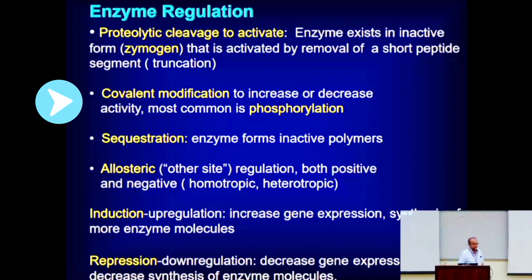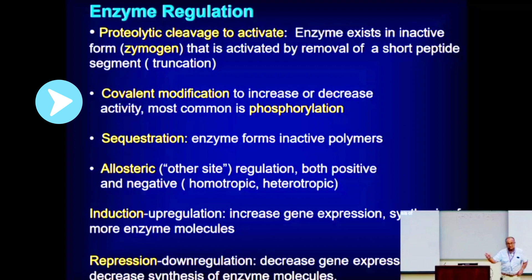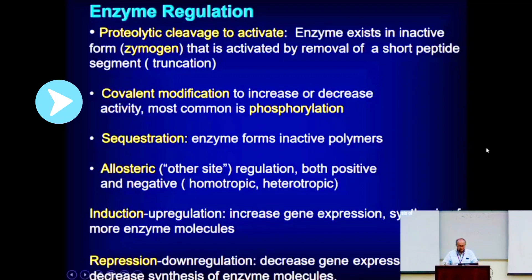The reverse is also true: if an enzyme is in the phospho state — for example, phosphoserine — and you remove that phosphate, you are breaking a covalent bond. That's still called covalent modification. So whether you're adding a phosphate or removing a phosphate, it's called covalent modification either way.